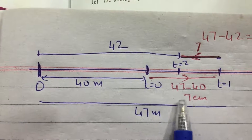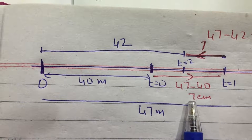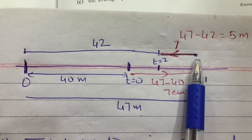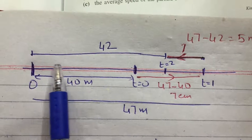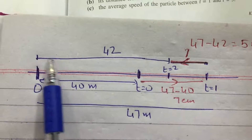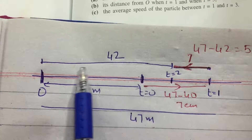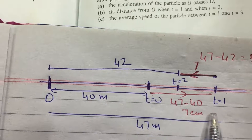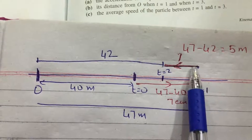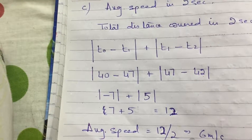The distance covered in the first second is 47 minus 40, which is 7 meters. We then find how much distance is covered from 1 second to 2 seconds. When we plug in t equals 2, the distance from the origin is 42 meters. So the distance covered from 1 second to 2 seconds is 47 minus 42, which is 5 meters. Total distance in 2 seconds is 7 plus 5 equals 12 meters.